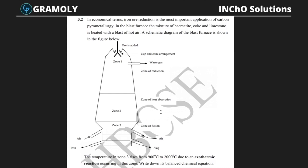Problem 3.2: In economic terms, iron ore reduction is the most important application of carbon pyrometallurgy. In the blast furnace, a mixture of hematite, coke, and limestone is heated with a blast of hot air. The question asks: the temperature in zone 3 rises from 900 to 2000°C due to an exothermic reaction — write its balanced chemical equation.